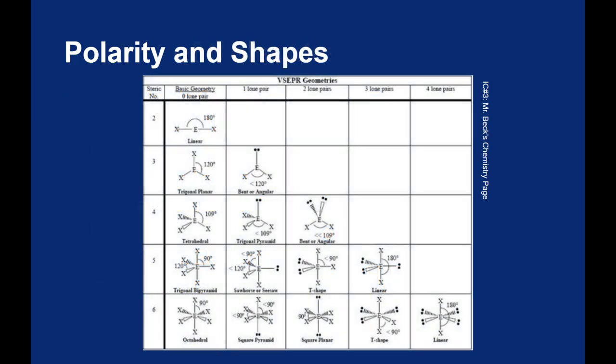With some of these expanded octets, it's actually possible to have lone pairs on the central atom but still be symmetric. So when we have five sites on the central atom, we start out with the trigonal bipyramid.